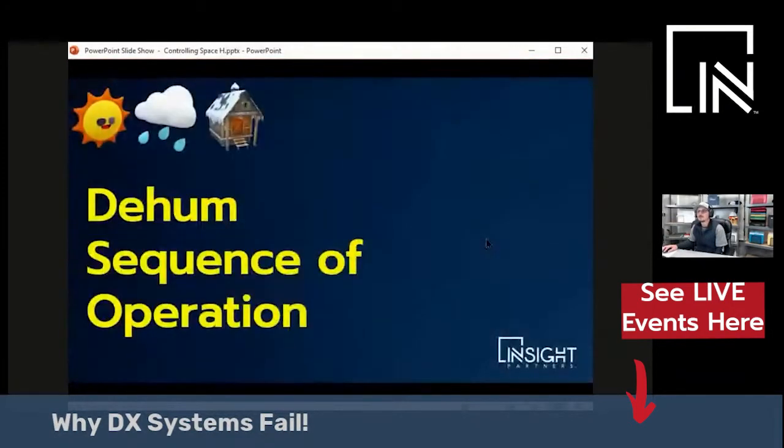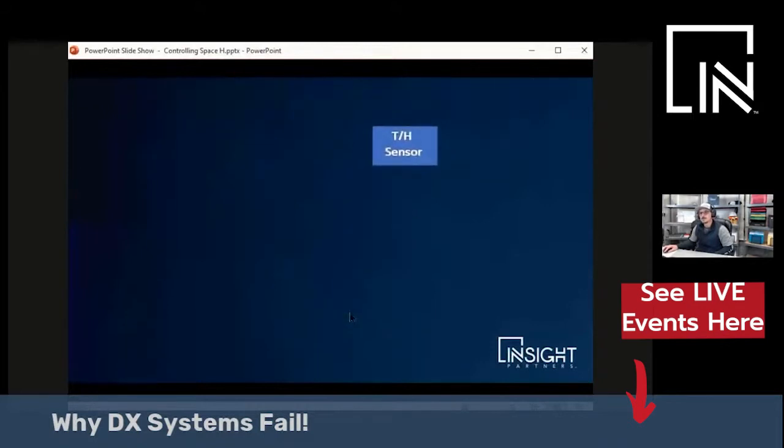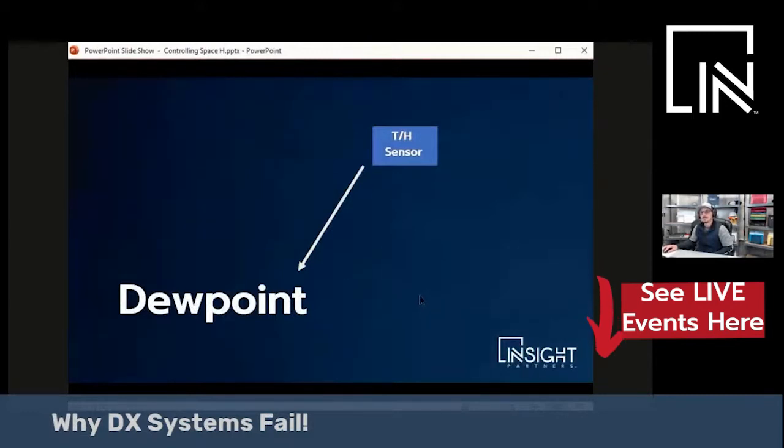Normal systems aren't designed to do that. So let's look at the dehumidification sequence of operation when you have a true unit that's designed to control temperature and humidity over all load conditions. I've added another component to this system we looked at earlier, which is called a reheat coil. We're also going to add, instead of a temperature sensor or a thermostat in the space, we're going to do a temperature and humidity sensor combo. So what that allows us to do is measure the actual dew point in the space. Dew point is a very good indicator of the actual amount of moisture in the space, much better than relative humidity.